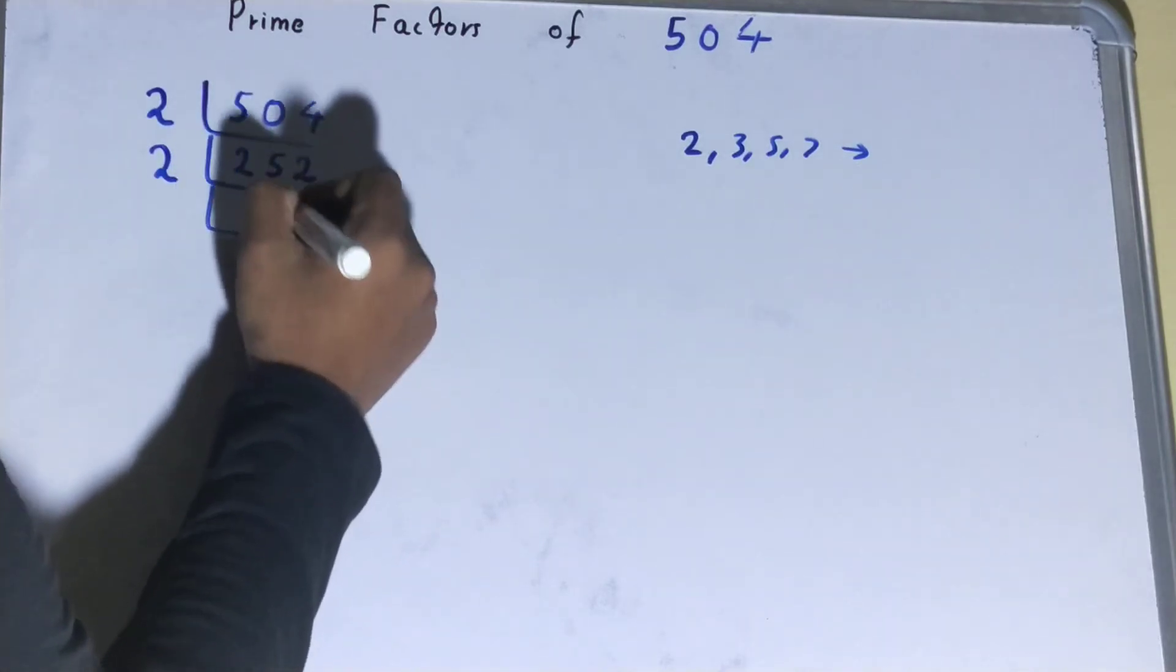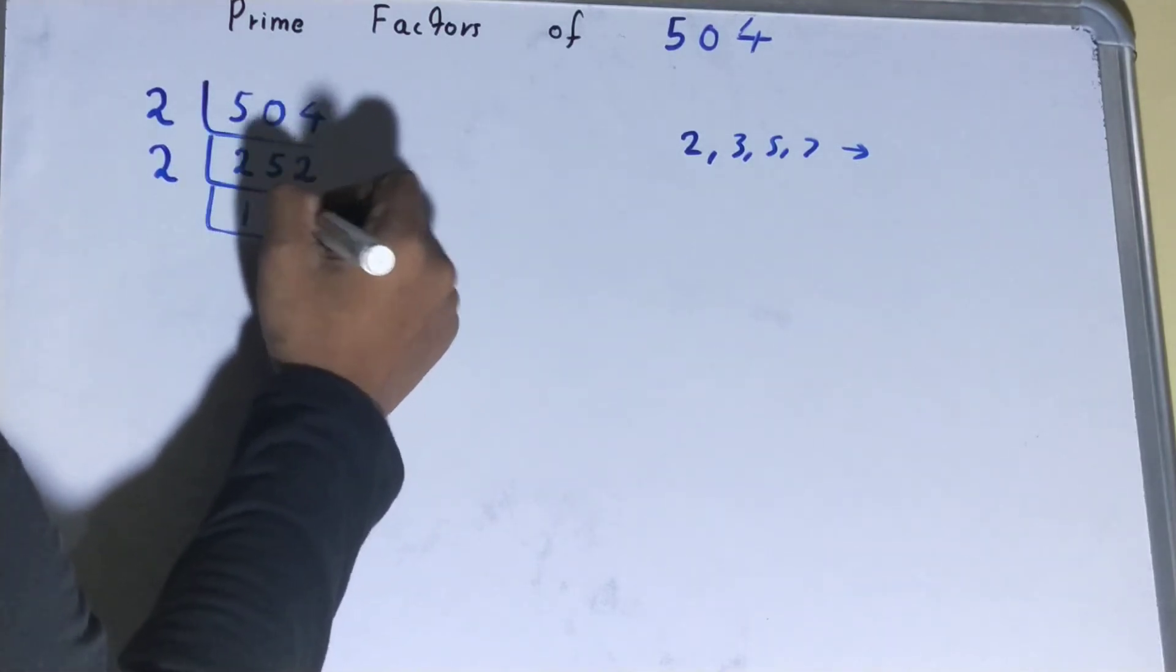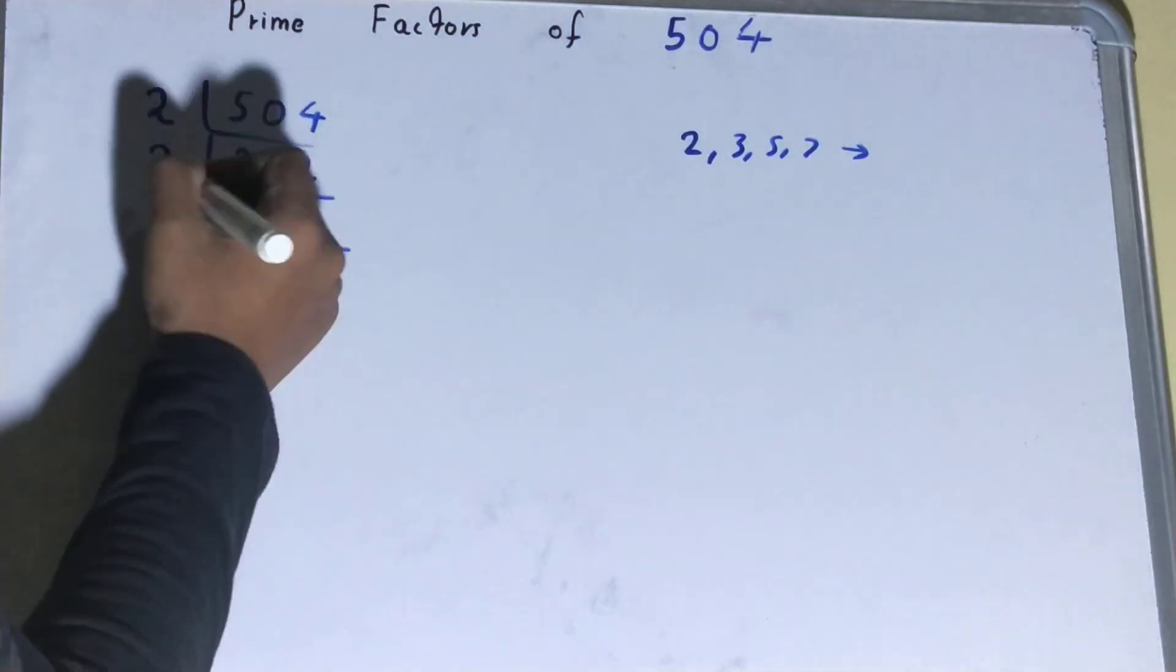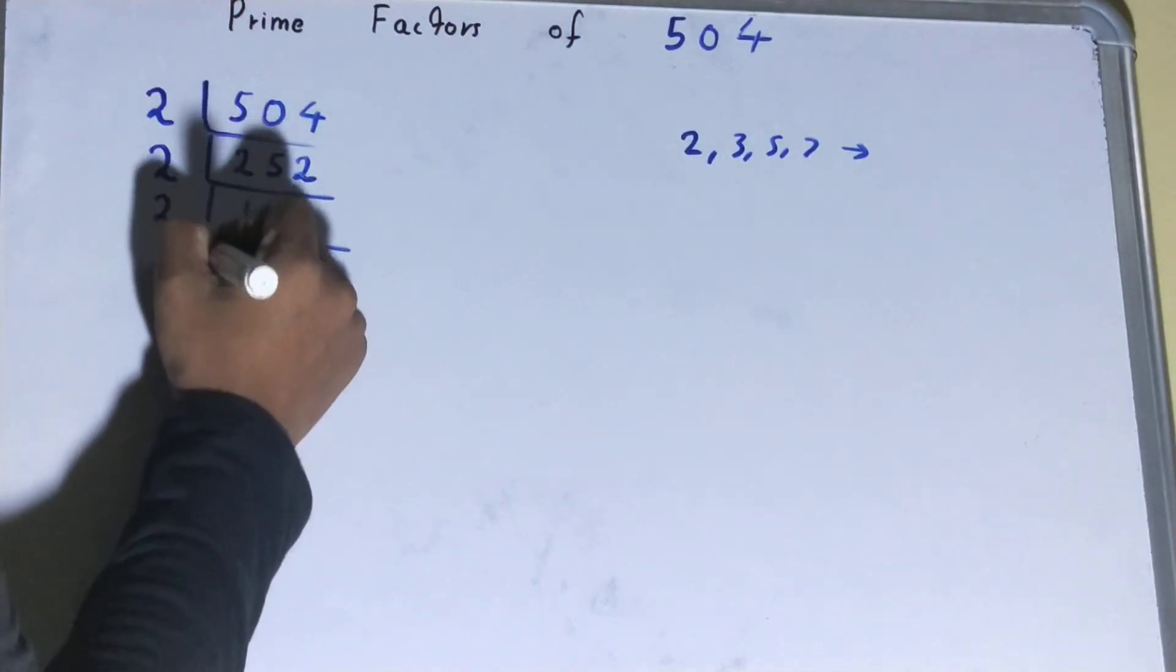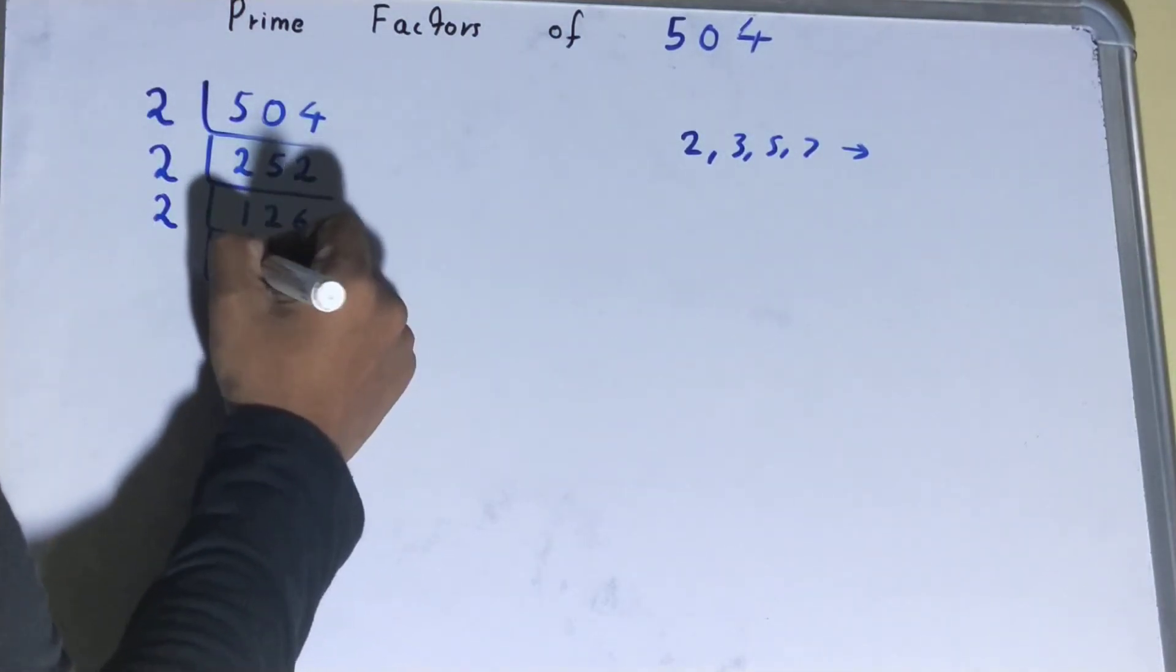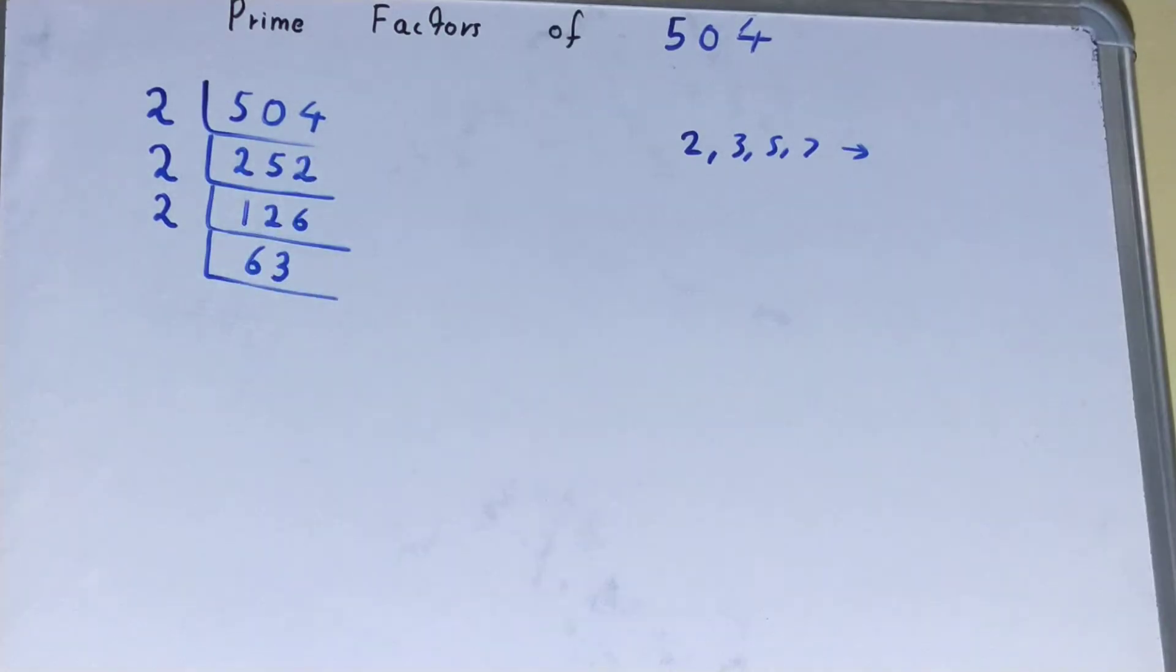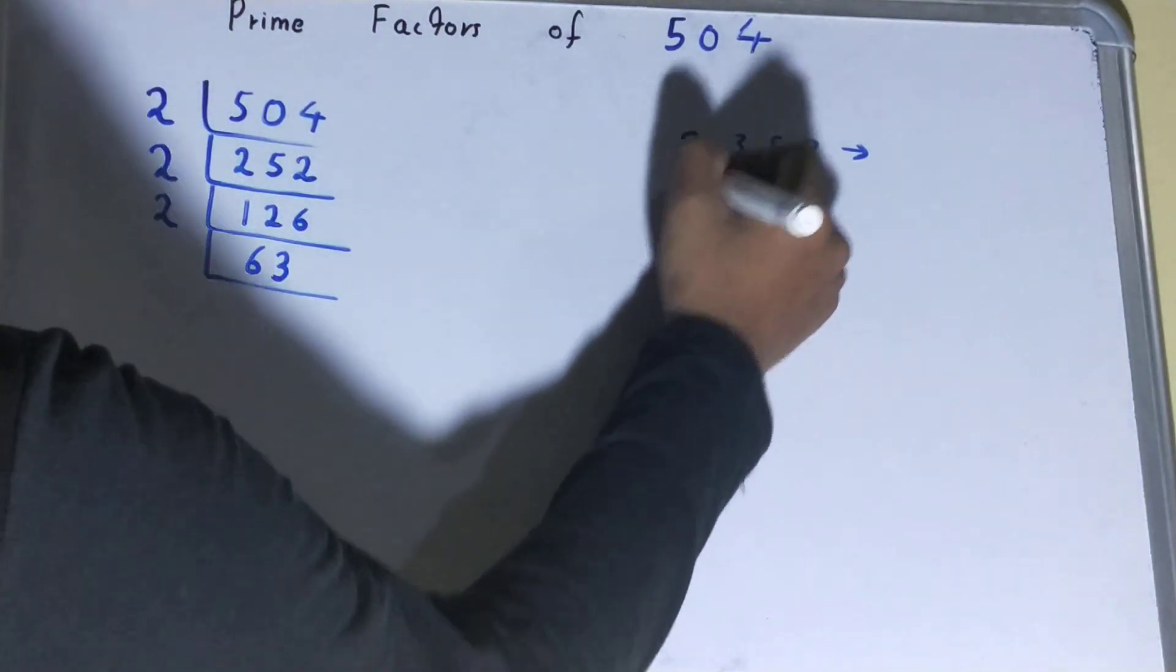Is the number 126 divisible by 2? Yes, it is even, so it is divisible. Divide it and you will be left with 63. Now, is the number 63 divisible by 2? The answer is no, it is an odd number, so we will go to the next lowest prime number, that is 3.